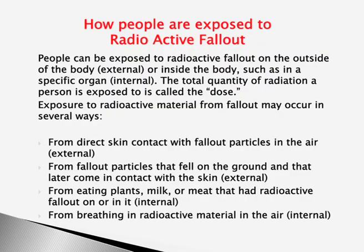People can be exposed to radioactive fallout on the outside of the body, called external fallout, and inside the body through special organs, called internal fallout. The total quantity of radiation a person is exposed to is called the dose. Exposure may occur through direct skin contact with fallout particles in the air, fallout particles on the ground, and from eating plants, milk, and meat that had radioactive fallout on them.